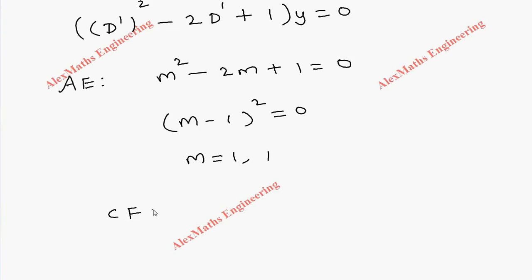Since we get equal values and it's a real value, the complementary function is (c₁ + c₂z)e^(mz), but we have to write in terms of z because we have the equation with D'. Since m is 1, it's e^z.